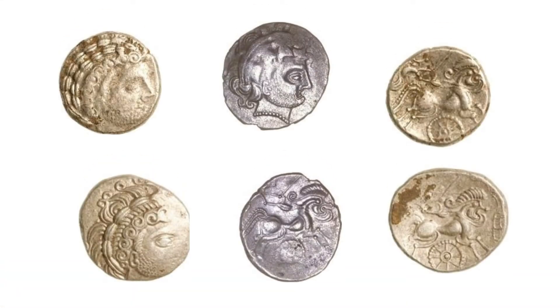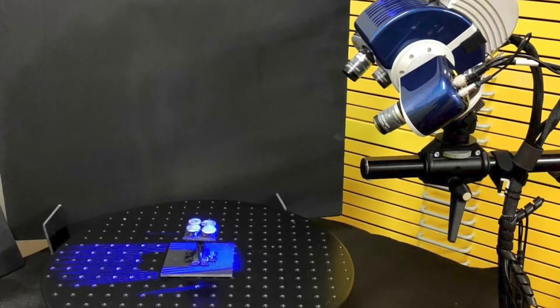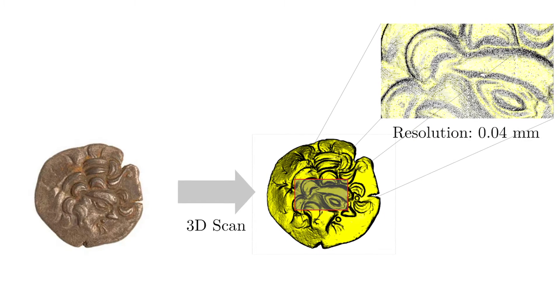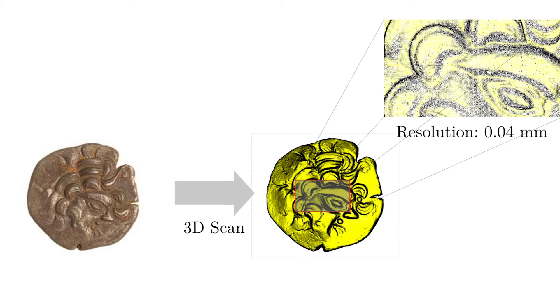Archaeologists use images to recognize dies on coins, but the problem is that with an image it's very difficult to make the difference between different patterns. So archaeologists decided to use 3D data — high quality scanners to scan the coins — and we use this 3D data to automatically recognize patterns on the coin.